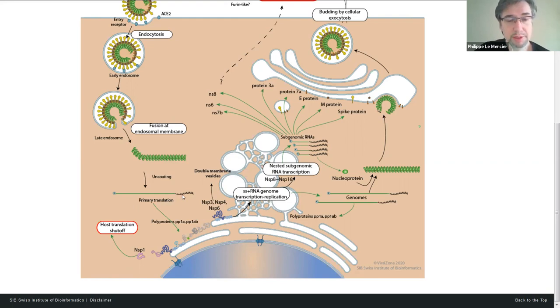Late endosomes have a more acidic pH, and this will trigger the fusion activity of the spike. The spike makes fusion between virion and endosome membrane, which releases the genome into the cytoplasm, which is uncoated. The genome is about 30 kilobases long. It's the longest RNA genome in biology, actually. It's just a messenger RNA, which will be translated first into two polyproteins.